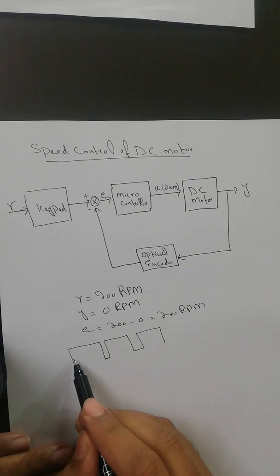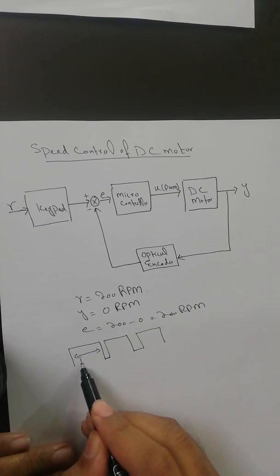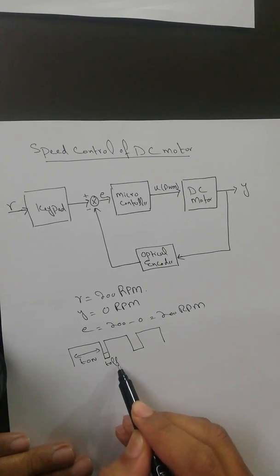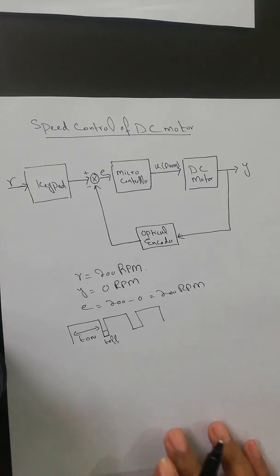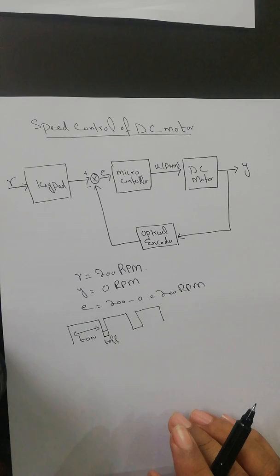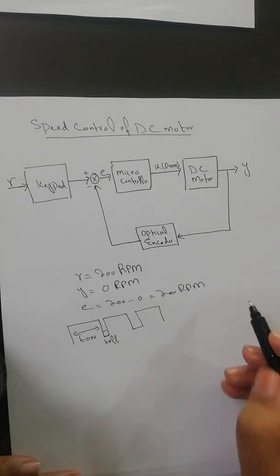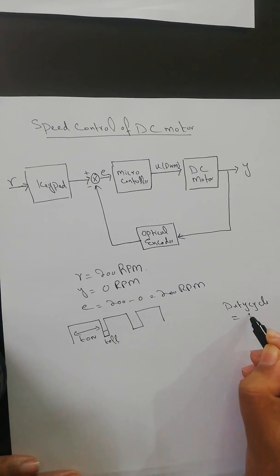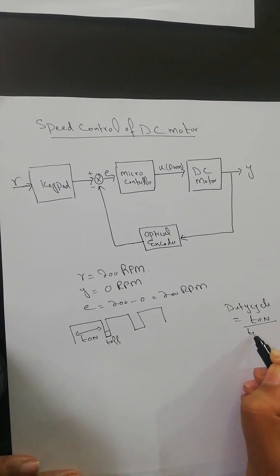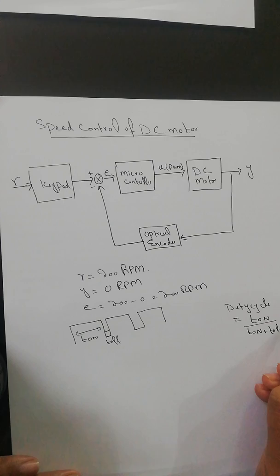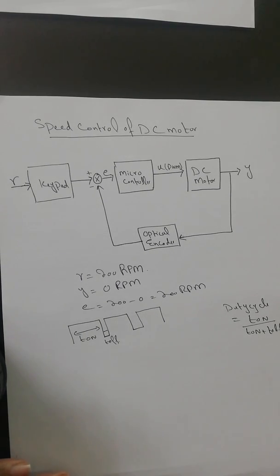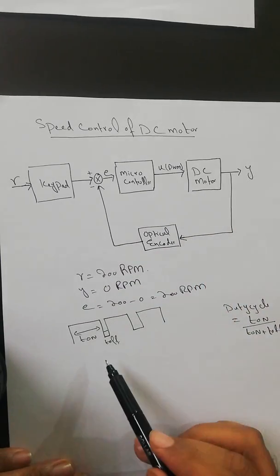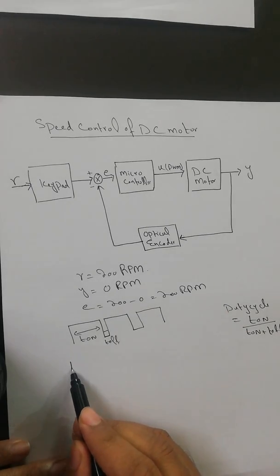The duty cycle is defined by T-on and T-off. Duty cycle equals T-on divided by T-on plus T-off. Initially, the controller will increase the duty cycle and the speed starts increasing.